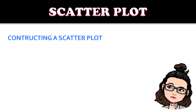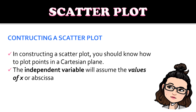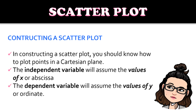How do we construct a scatterplot? These are the steps you could follow for constructing a scatterplot when you already have your data. You would need to know how to plot points on a Cartesian plane — we have the X and the Y axis. The independent variable will assume the values of X, or the abscissa, and for the dependent variable, they will assume the values of Y, or the ordinate. I hope you still remember how to plot points on a Cartesian plane, because that will be very beneficial for constructing a scatterplot.